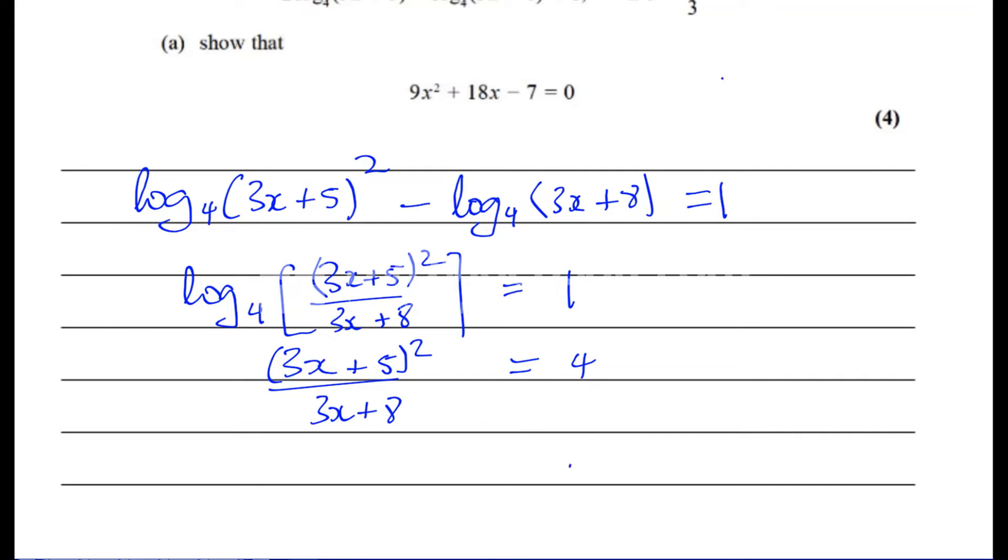3x plus 5 all squared over 3x plus 8 is equal to 4. Okay, that's for using the basic law of logarithms. Log to the base p of q equals r. So you can say this is the base, p to the power of r, and is equal to q. Okay, so 4 to the power of 1, which is 4, is equal to what's in this bracket.